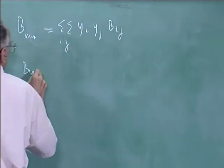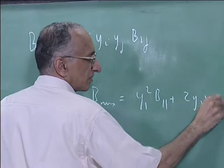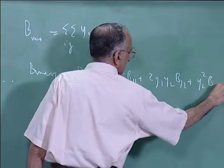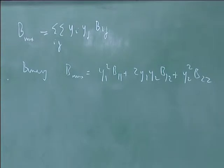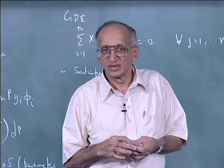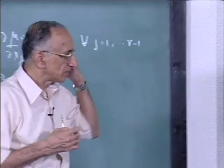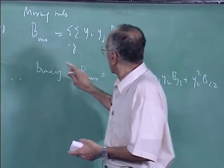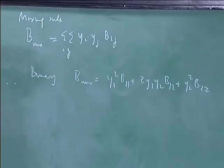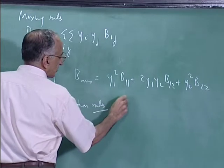For a binary mixture, B_mix equals y₁² B₁₁ plus 2y₁y₂ B₁₂ plus y₂² B₂₂, where B₁₁ and B₂₂ come from pure substances, and B₁₂ is a hypothetical cross second virial coefficient arising from 1-2 interactions only. You cannot realize it purely by experiment because when you have 1-2 interactions you also have 1-1 and 2-2 with them. These are the mixing rules. You also have combination rules, which tell you what B₁₂ looks like.